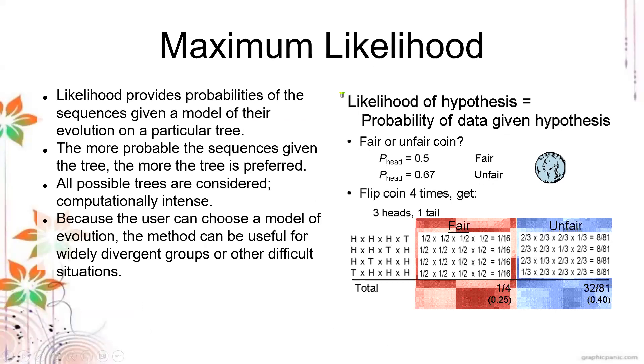The third one is maximum likelihood. Maximum likelihood provides probabilities of the sequences given a model of their evolution on a particular tree. The more probable the sequence given the tree, the more the tree is preferred. Maximum likelihood is getting the probability of getting those particular mutations and getting the maximum data. It is computationally intense because you generate all possible trees and then pick one that is the most probable. That's why it's called maximum likelihood. The user can choose a model of evolution. This method can be useful for wildly divergent groups or difficult situations, but it's computationally intensive.